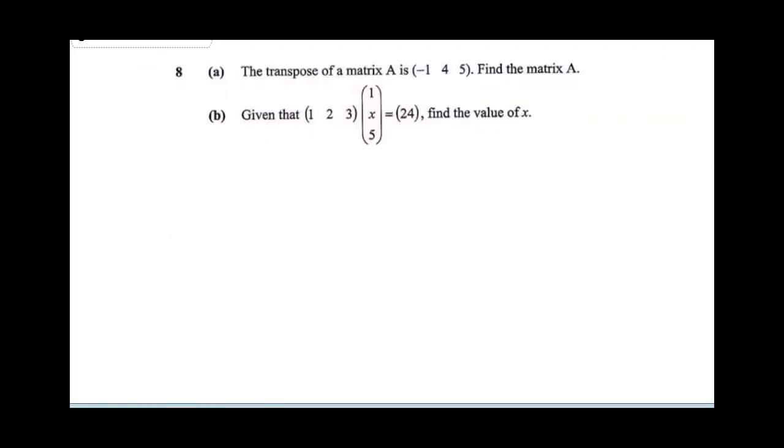Question 8 says the transpose of a matrix A is minus 1, 4, 5. If the transpose is minus 1, 4, 5, find A. If A transpose is equal to minus 1, 4, 5, therefore A will be just invert the matrix, let the rows become the column and the column becomes the row. It's going to be minus 1, 4, and 5. So this is A.